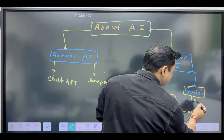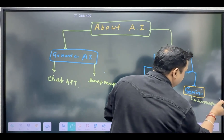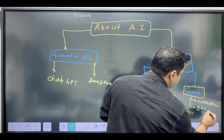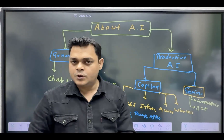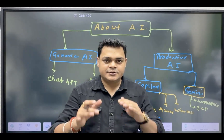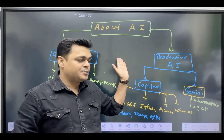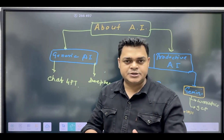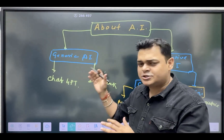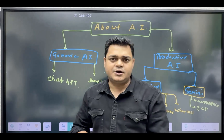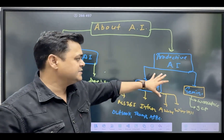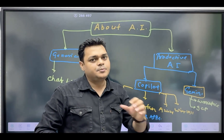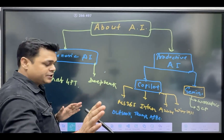Regarding Gemini, it is also a productive AI, directly integrated with Google Workspace, which helps manage email-related services. You can also use the features of Gemini with Google Cloud Platform (GCP). As a working IT professional, always try to use Productive AI, because we are not able to integrate Generic AI with our existing infrastructure and activity.